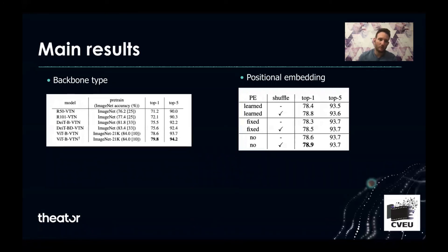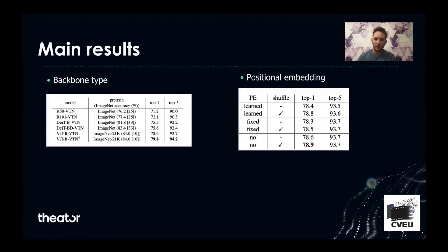The best performance we achieved uses the VIT-based VTN as our backbone with heavy augmentation. We also learned that no positional embedding at all gives better results on the Kinetics dataset. One interesting experiment we performed was to train the network and then input reshuffled input frames to the Longformer, and we found that it actually improved the results.